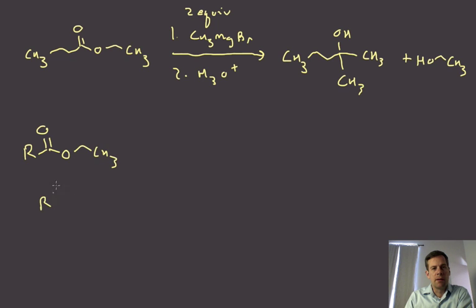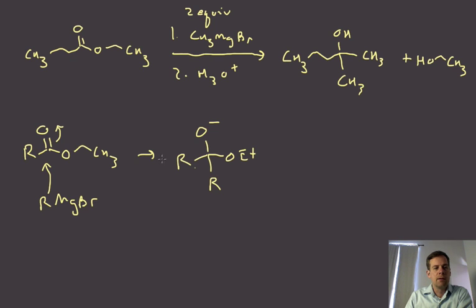So we've got R magnesium bromide. It works the same with the lithiums too. This is going to add and we'll get to this type of intermediate. And let me just put a distinguishing thing there. So we've just added that R group. And now when this kicks out, it expels the ethoxide. We get to a ketone. And we just kicked off the ethoxide. We'll get to a ketone.